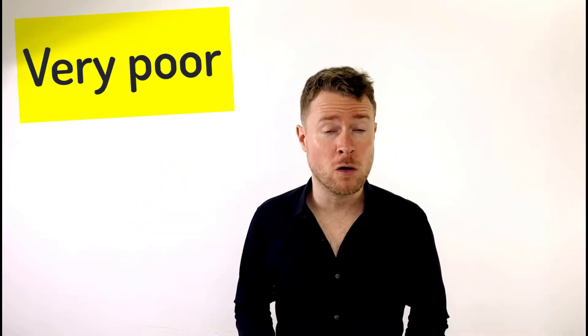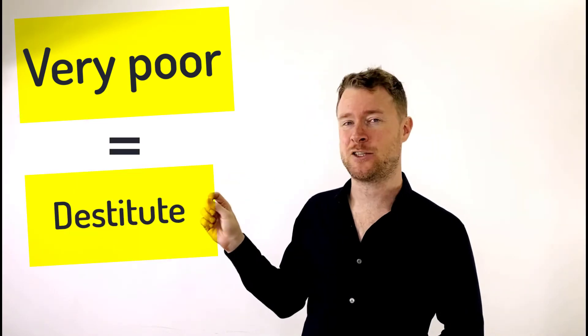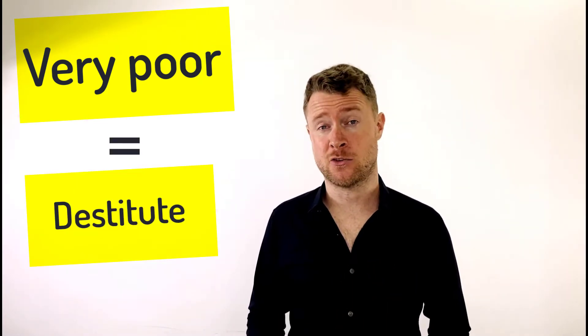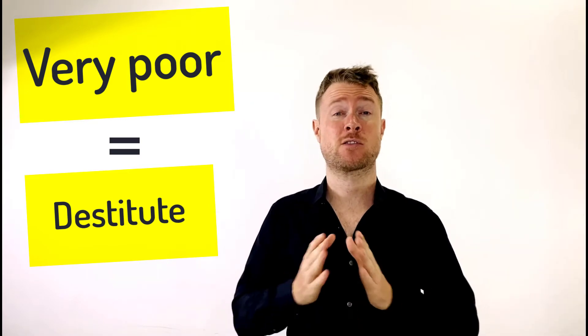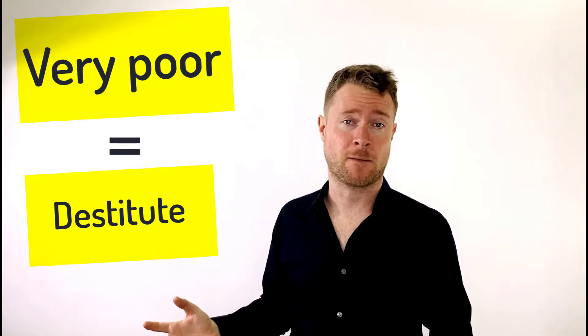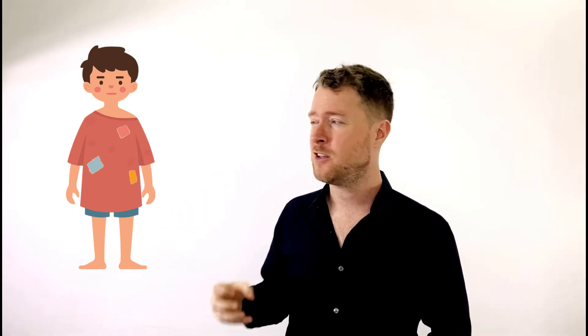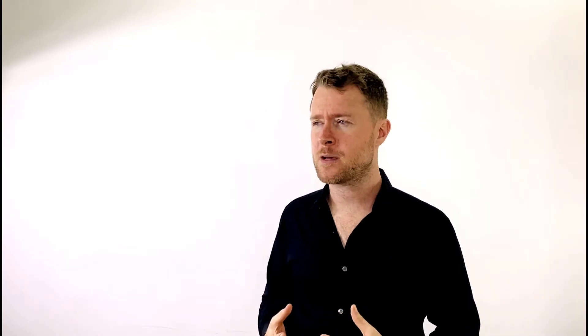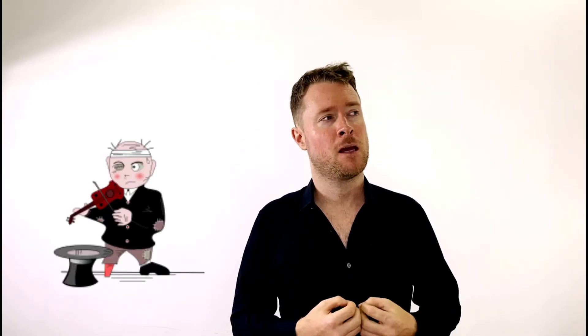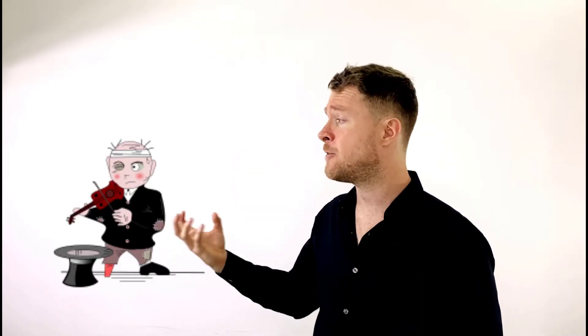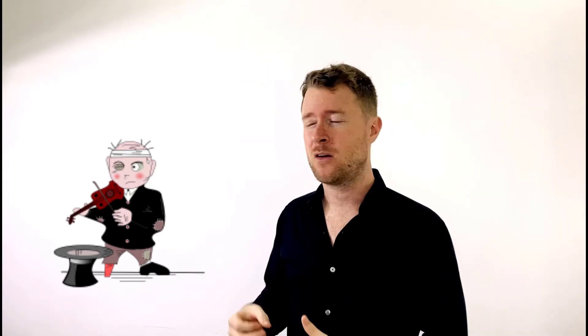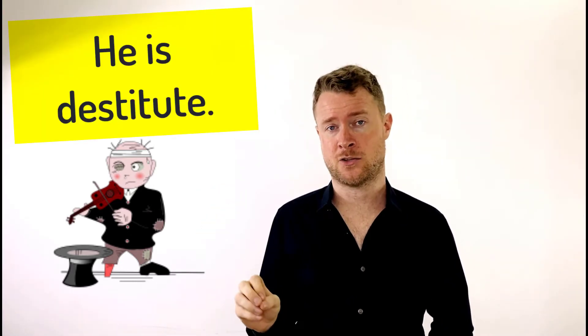When we want to describe someone who's very poor, we can use the word destitute. Destitute means so poor you pretty much have nothing. You don't have enough money for food, for a drink—you are destitute, you have nothing. When somebody is so poor that they are struggling, it's difficult for them to survive, we say he is destitute.